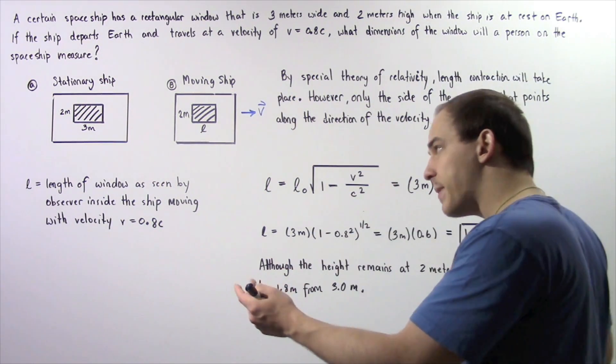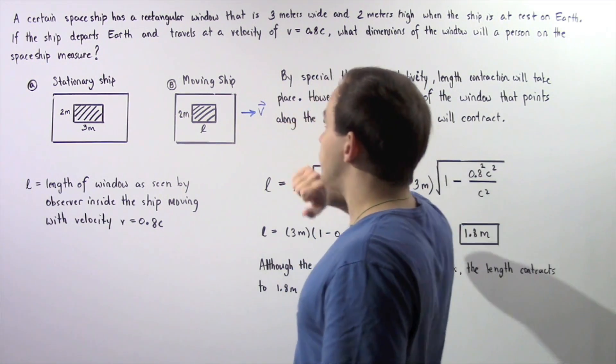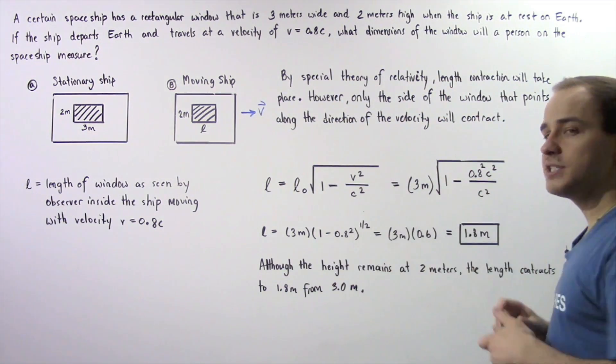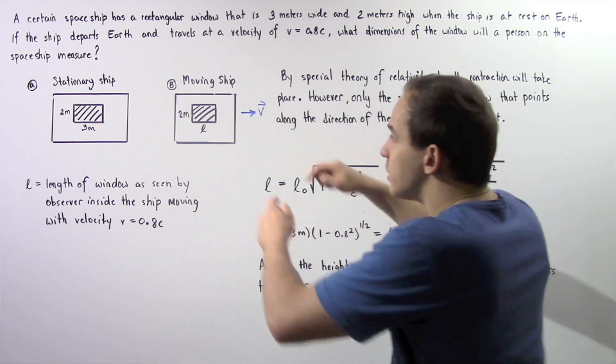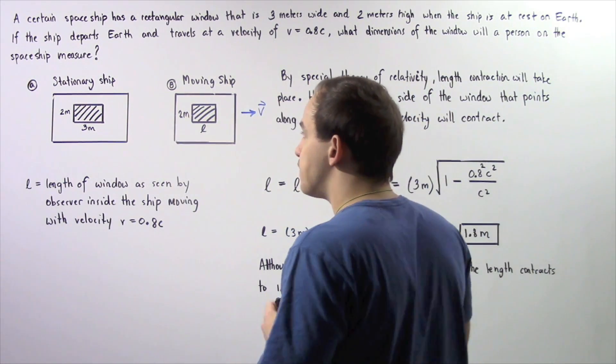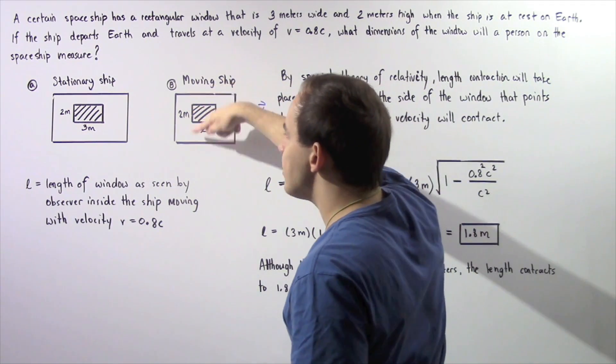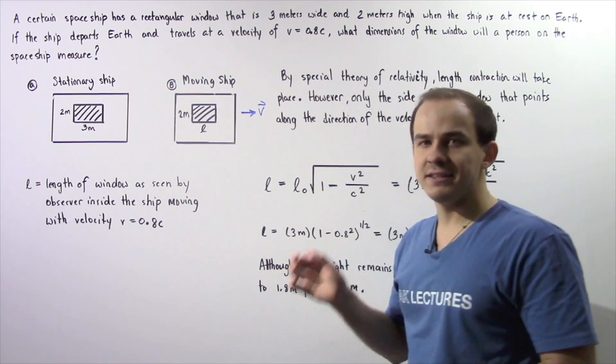On the other hand, when the spaceship begins to move with the velocity given by V, length contraction takes place. So the width of our spaceship essentially decreases while the height of the spaceship will remain the same.